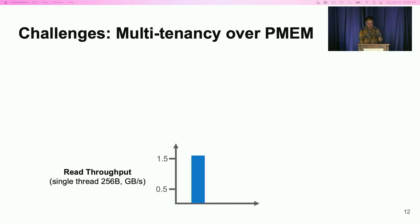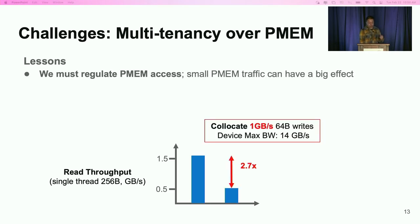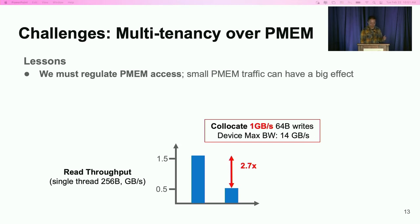The figure here presents the single-thread 256-byte PMEM read throughput. We show the number when there is no other traffic going to the same device, and also the throughput when there is a small amount of traffic added to the same device. What we can see is that even a small amount of PMEM traffic can significantly impact co-located workloads. So we must regulate those PMEM accesses from different clients.